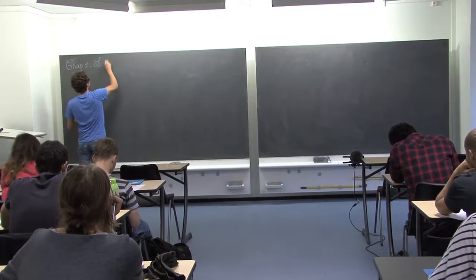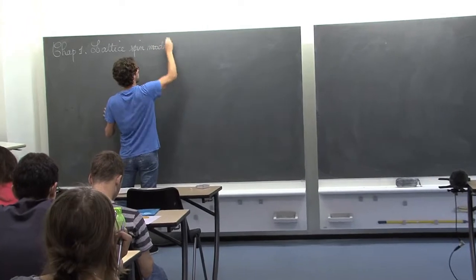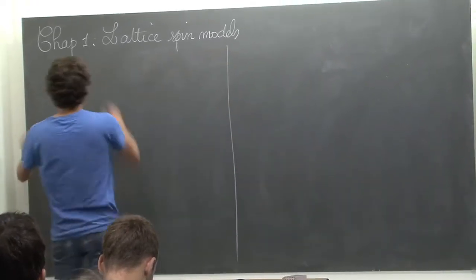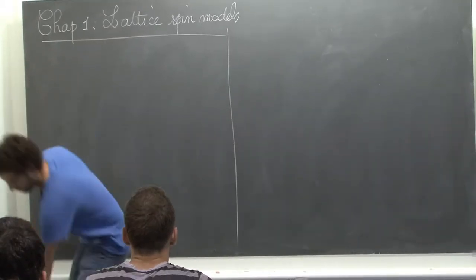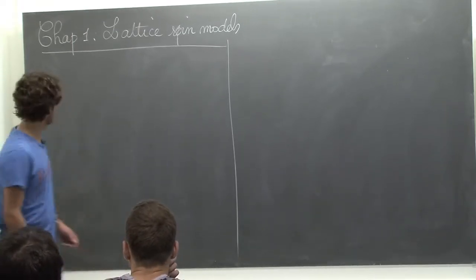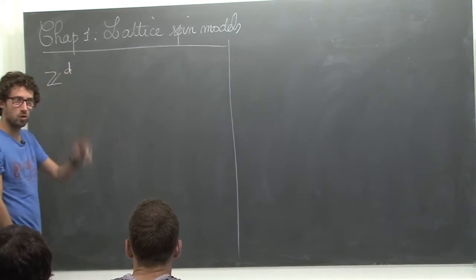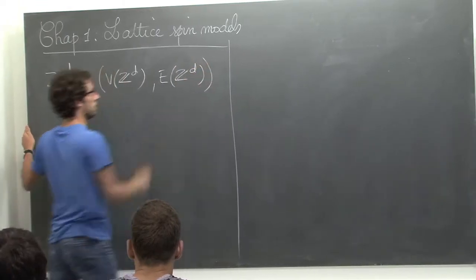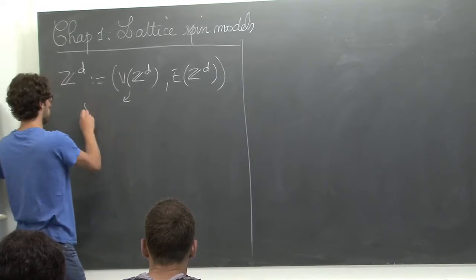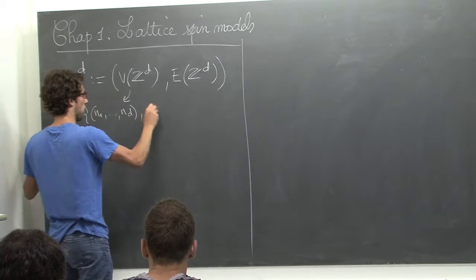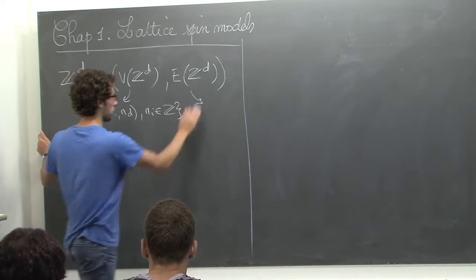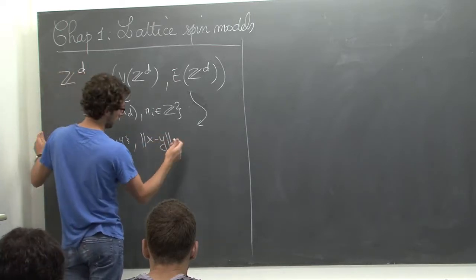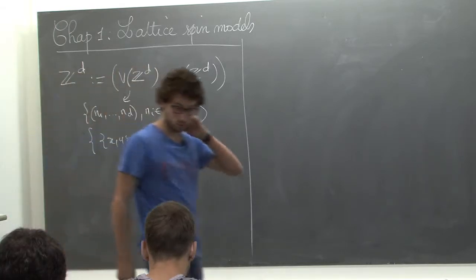As the name suggests, the lattice spin model is on a lattice — I will restrict myself to Z^D. The vertices are just Z^D: integers (n_1, ..., n_d) with n_i in Z. The edges are just the couples {x, y} where |x - y| = 1, so these are the nearest neighbors. When I look at a graph G, it will always be a subgraph of Z^D, and I will identify the set of vertices with G itself.